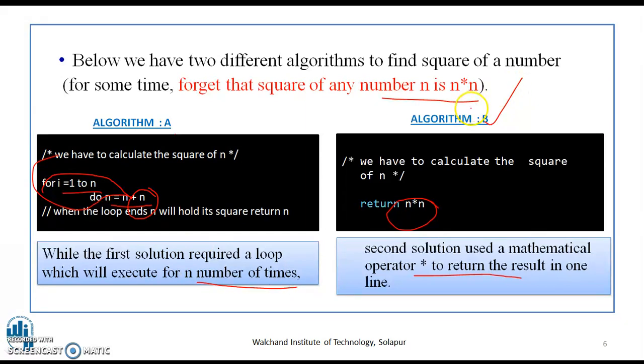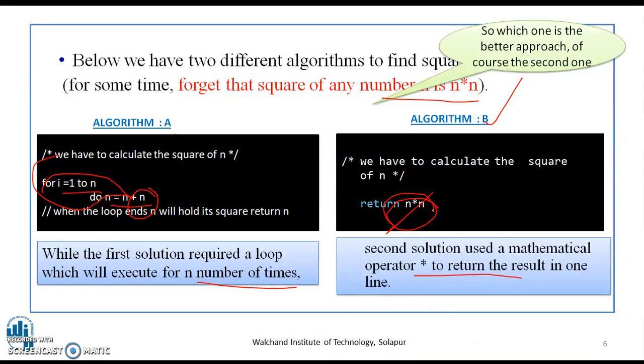Whereas, in algorithm B, we calculate this with the help of a mathematical operator of multiplication. So, which is a better approach? Of course, the second one. Because it uses the mathematical approach with an operator.